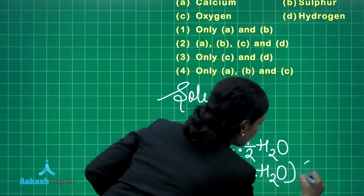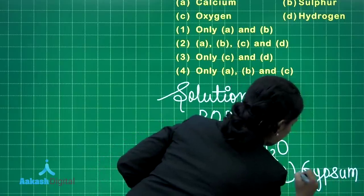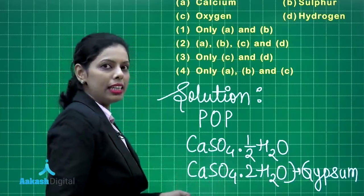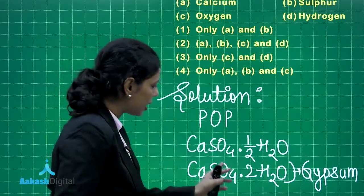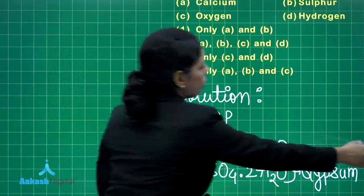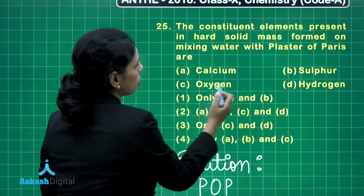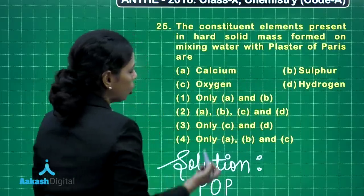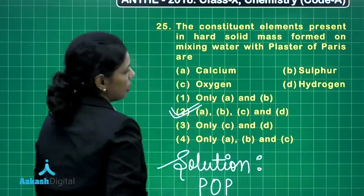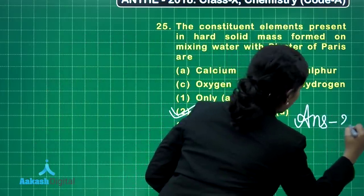This compound is gypsum. Since it is gypsum, you can easily identify that calcium is there, sulfur is there, oxygen is there, and hydrogen is there. Checking the options, calcium, sulfur, oxygen, and hydrogen are all four given in option two. So option two is the correct answer.